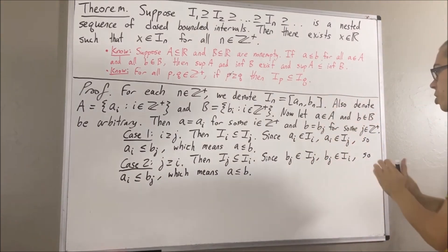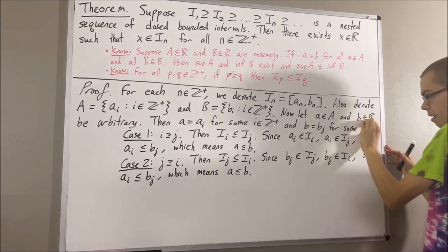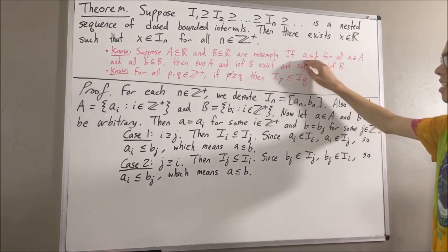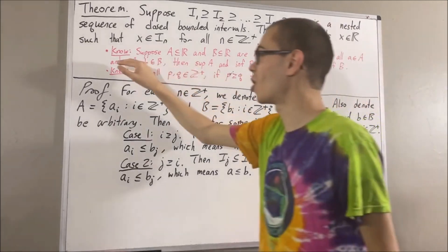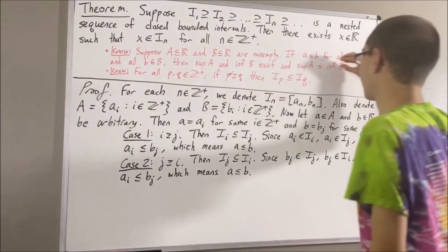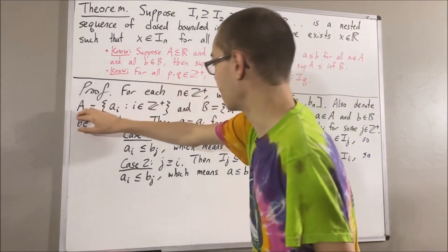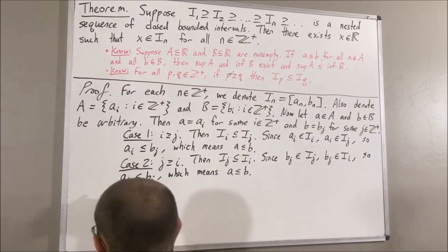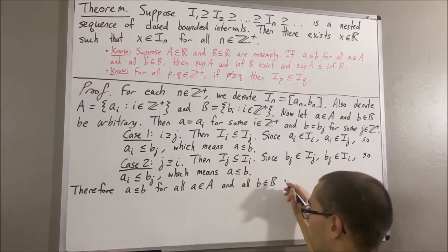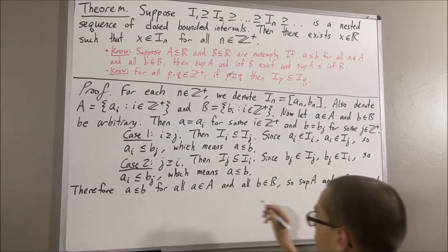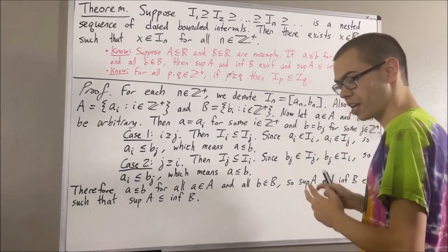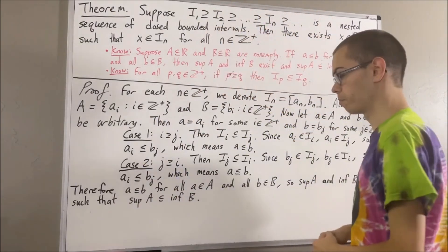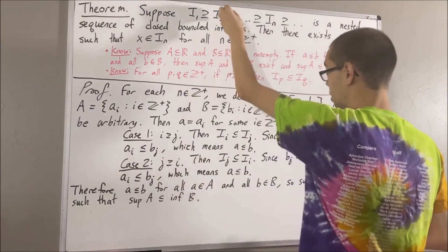Putting this together now: we gave ourselves an arbitrary element a in A and an arbitrary element b in B, and proved that a is less than or equal to b. Since these two were arbitrary, we have shown that a is less than or equal to b for all a in A and all b in B. So by the preliminary result, we can conclude that the supremum of A and the infimum of B exist, and the supremum of A is less than or equal to the infimum of B. It turns out you could show that the supremum of A is an element of every single one of these closed bounded intervals, and you could also show that the infimum of B is an element of every single one of these closed bounded intervals.